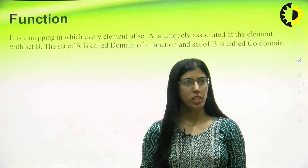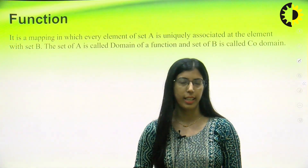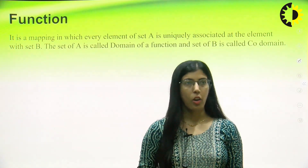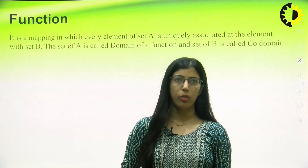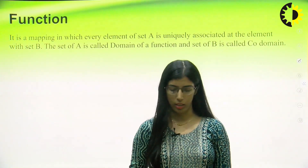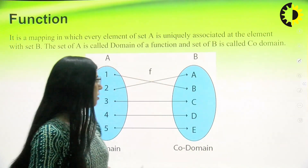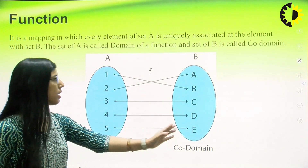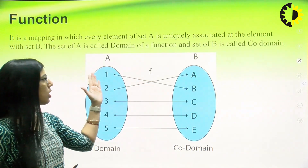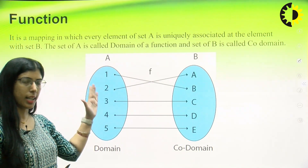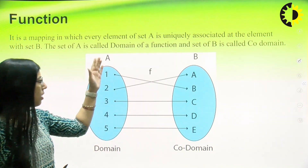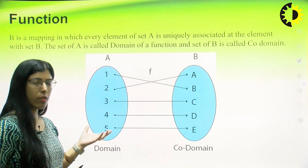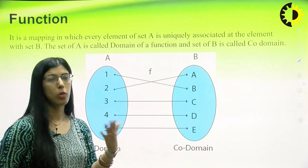What is a function? A function is a mapping in which every element of set A is uniquely associated with elements of set B. The set A is called the domain of the function and the set B is called the co-domain. This is the diagrammatic representation of a function where the first set is the domain and the arrows represent the association of elements from set A to set B.